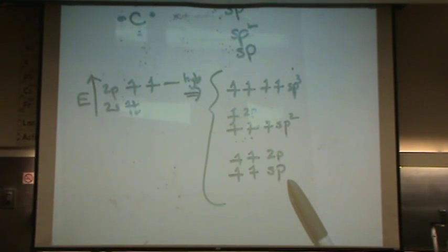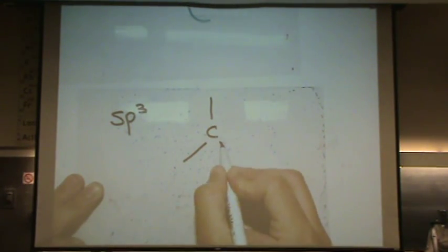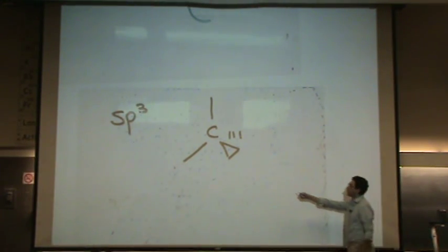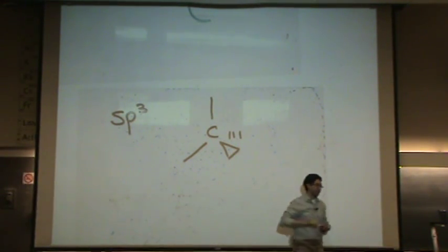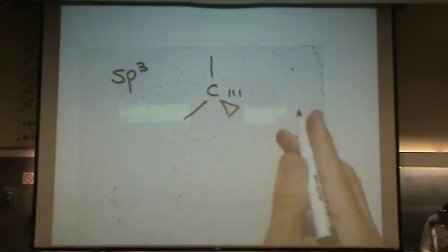Let me draw those out for you so you can see what they would look like. The sp3 carbon will look like this: tetrahedral, two are in the plane. One's going towards you - the wedge. And the dash is going away from you, into the screen.